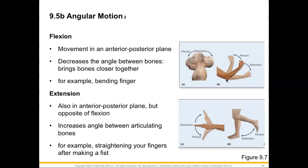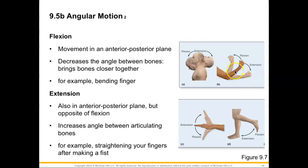Another example of flexion would be bending a finger, curling it in toward you, or bending your neck anteriorly. For extension, we are also going to be in that anterior-posterior plane, but we do the opposite of flexion — increasing the angle between articulating bones. Pulling the forearm back down moves the ulna and radius away from the humerus, increasing that angle.